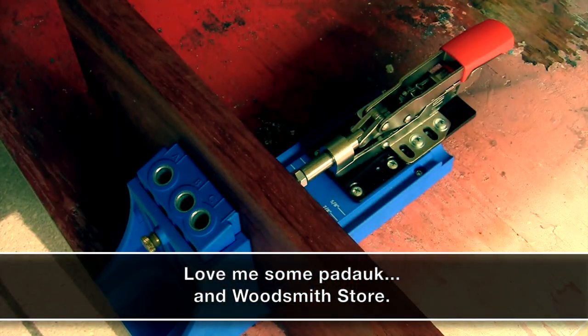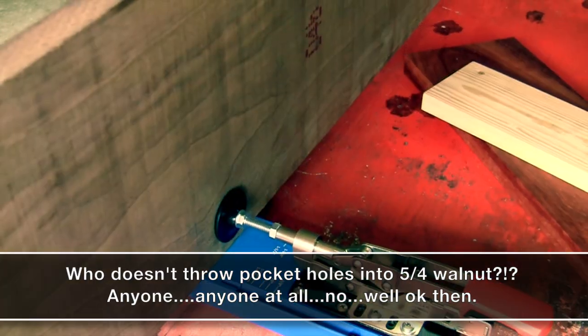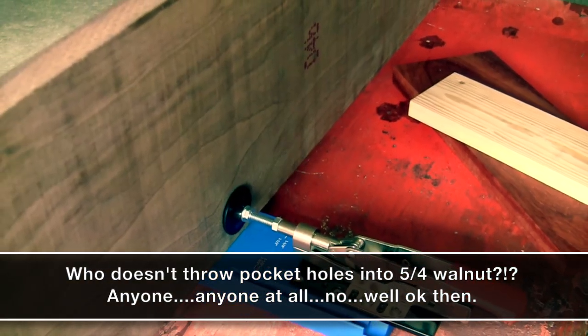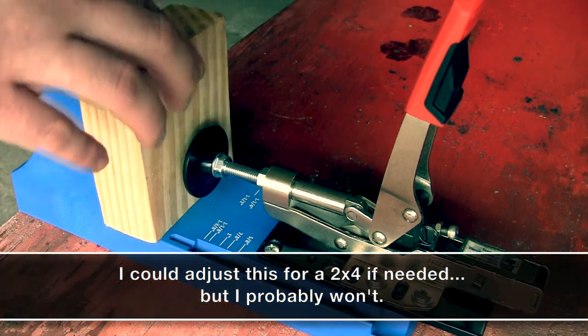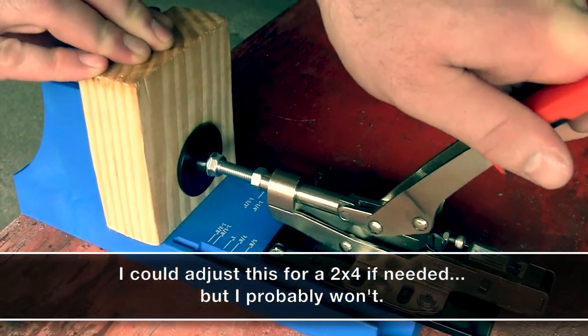But I am unable to throw pocket holes into a 2 by 4 because this toggle clamp can only adjust up to five-eighths of an inch. Meaning the range of my K4 with this clamp is between three quarters of an inch and an inch and a quarter.